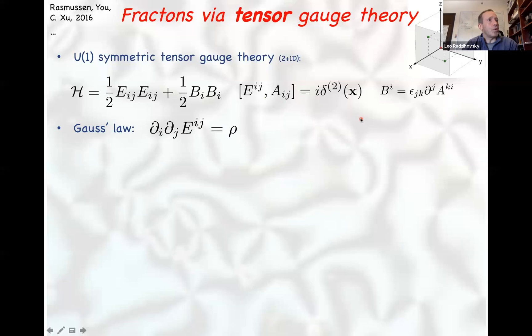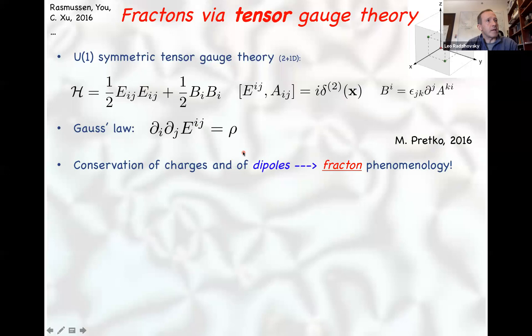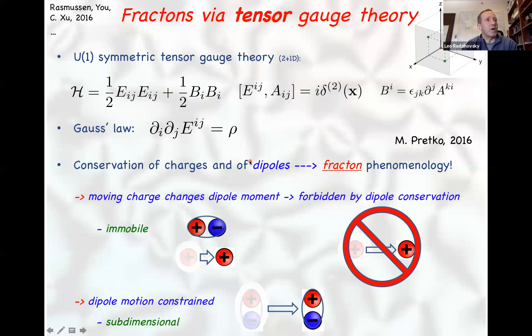These models naturally have a generalized Gauss's law where rather than a single divergence of the electric field tensor giving the charge, the Gauss's law involves the divergence on both indices — a double divergence. These models had been studied in high energy physics and in quantum spin liquid research before fractons came on the scene, but it was Michael Pretko who crucially pointed out that this double-divergence Gauss's law encodes the immobility of fractons.